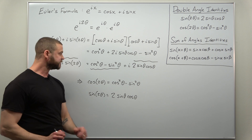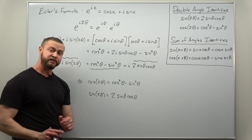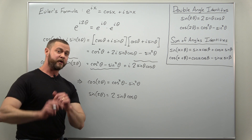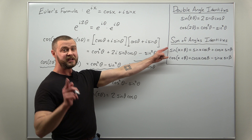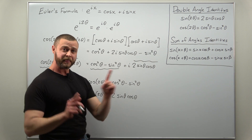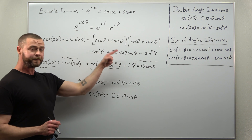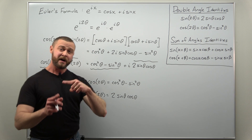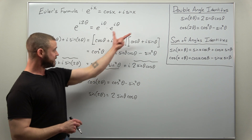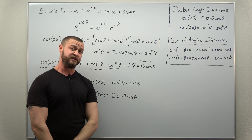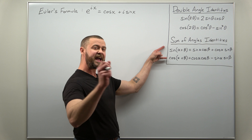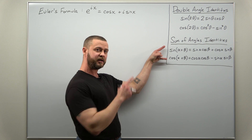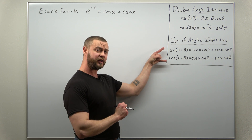With practice, this will take seconds — a great little tip during exams. Next up, let's get to the sum of angle identities, which is pretty much the same work, just with different groupings of α and β. We're going to replace x with α plus β and derive the sum of angle identities.